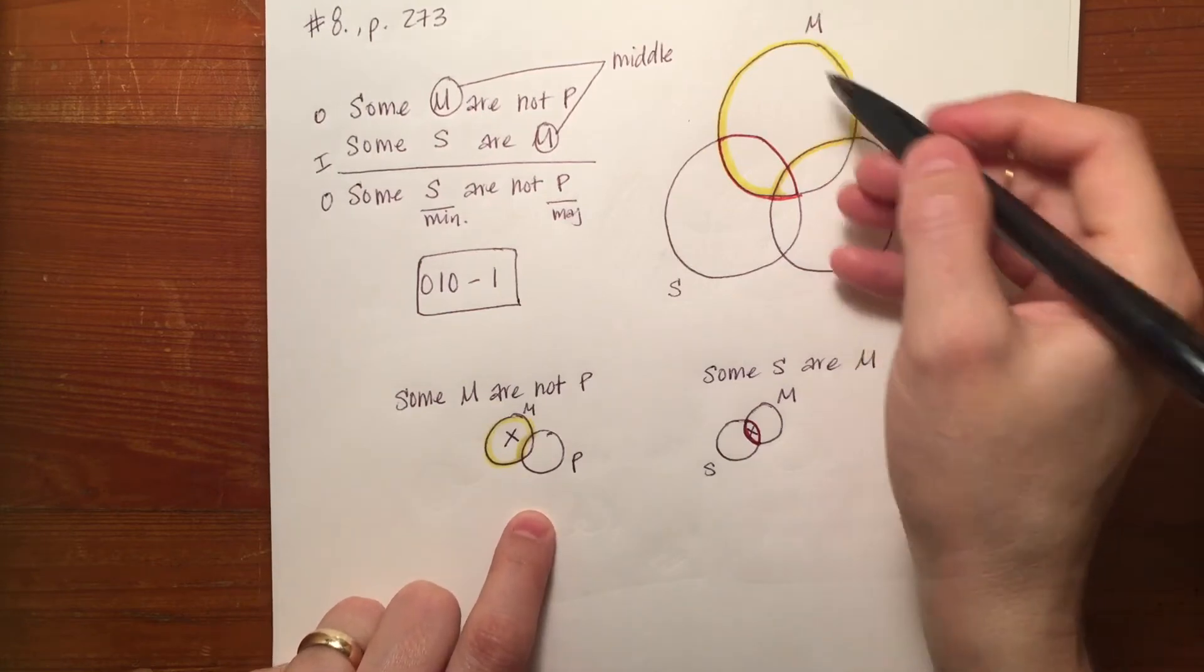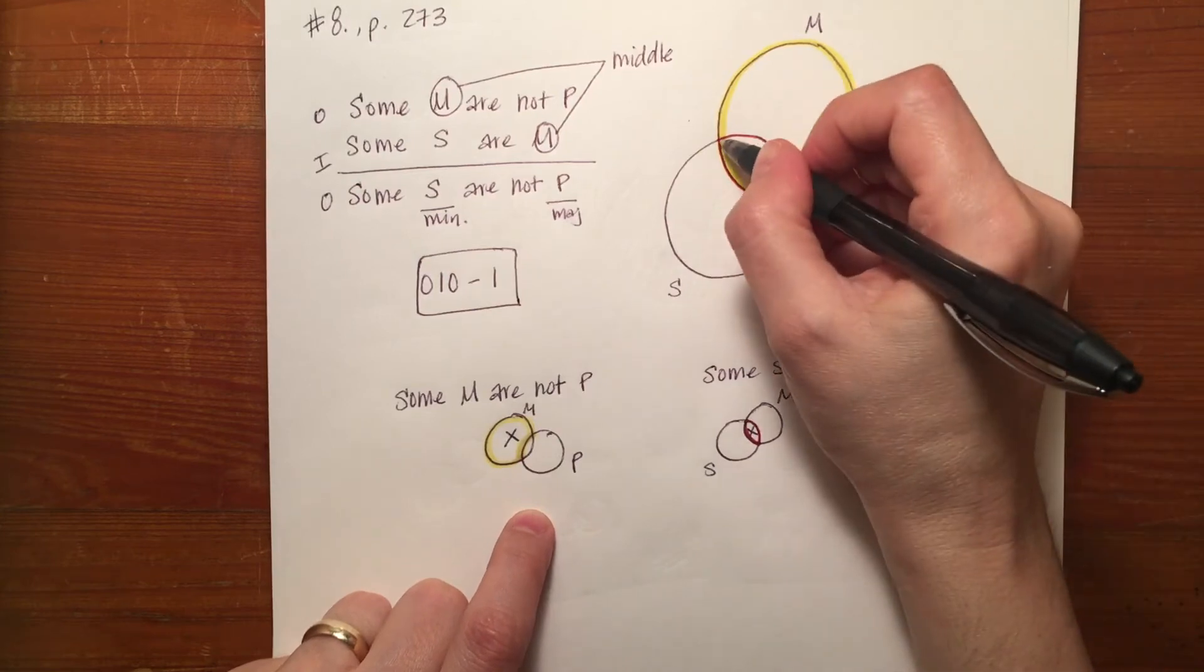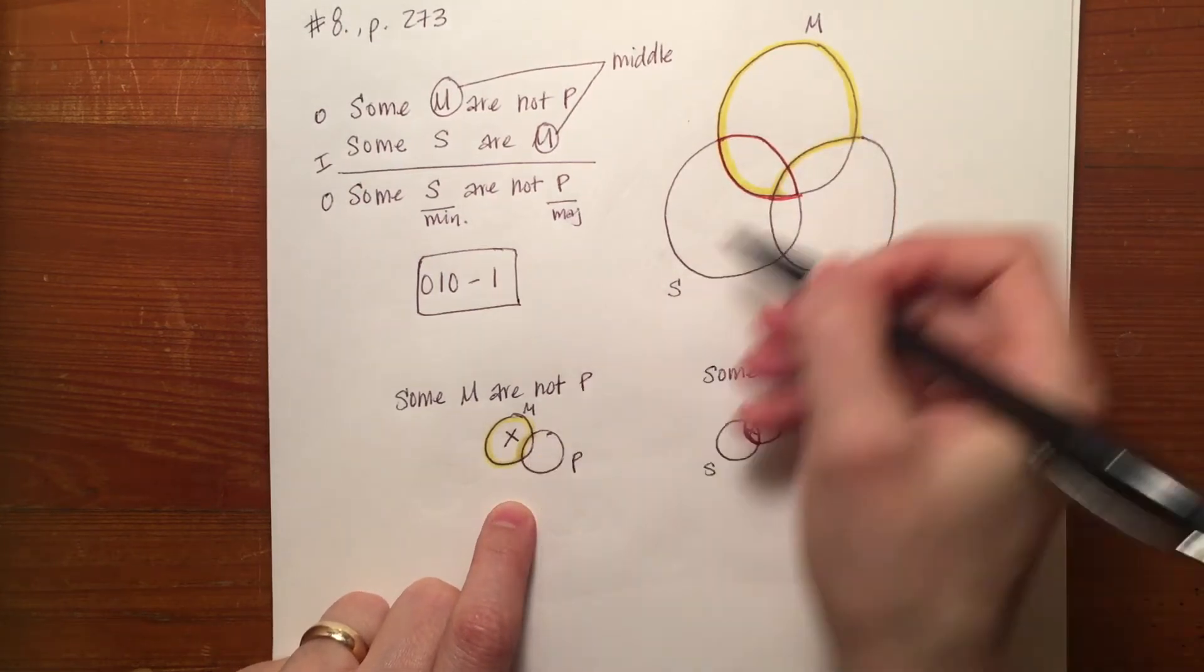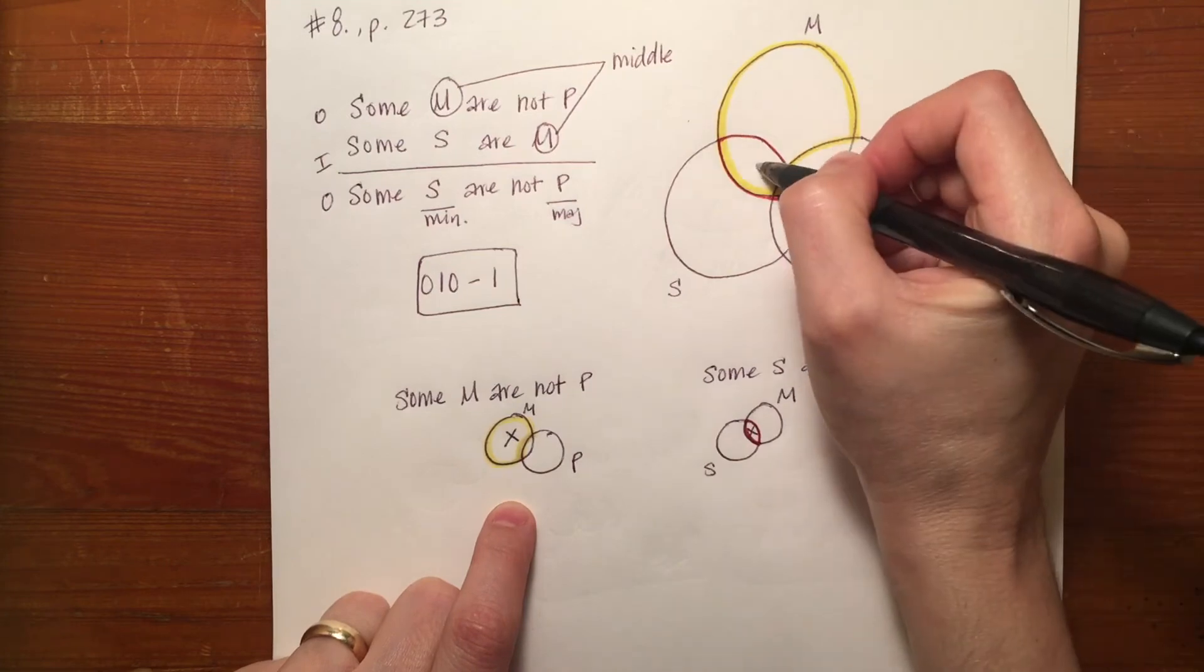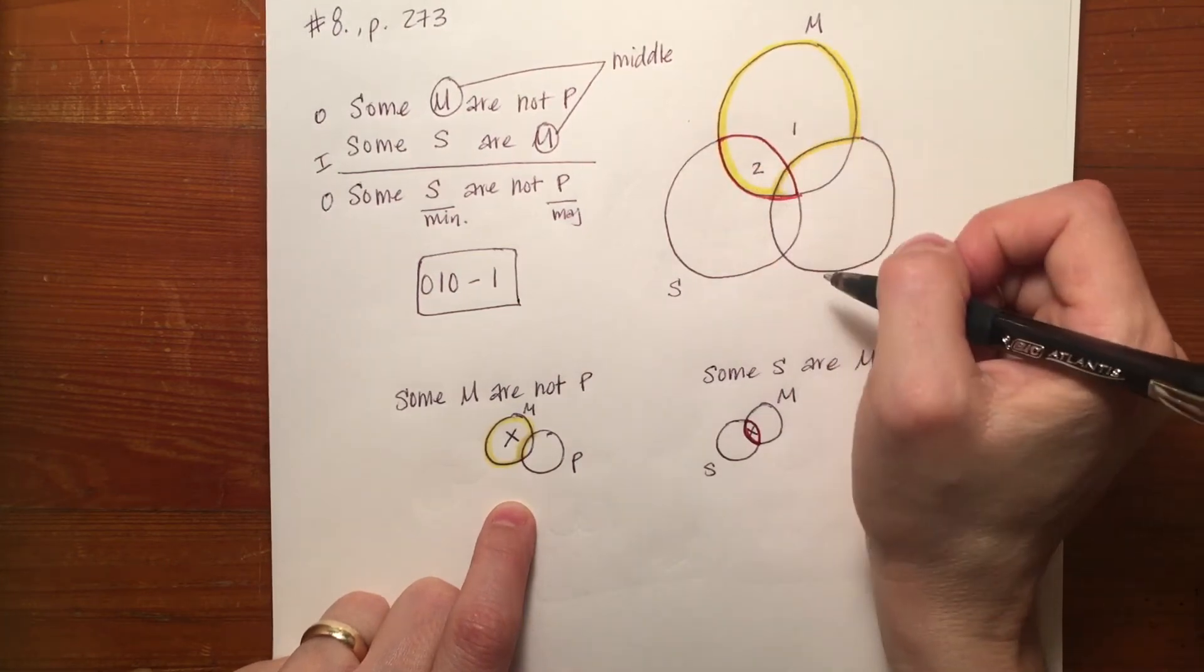But what I notice is, again, that that pesky S circle is dividing my larger part of M or my M pac-man into two parts. Parts one and two of the Venn diagrams.